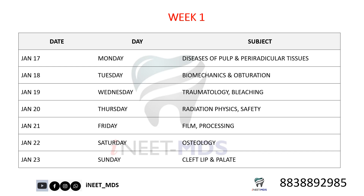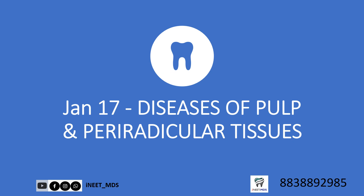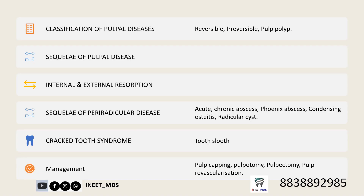First day is diseases of pulp and periradicular tissues. From that topic, what all you must cover — these topics and the MCQs are related to those particular points. From diseases of pulp and periradicular tissues, first you should read about the classification of pulpal diseases — what is reversible and irreversible pulpitis and the difference between them.